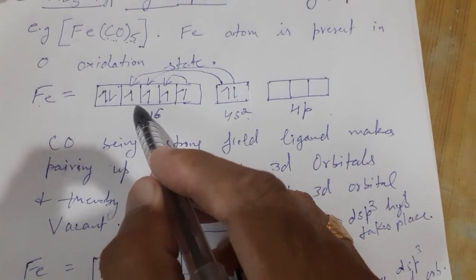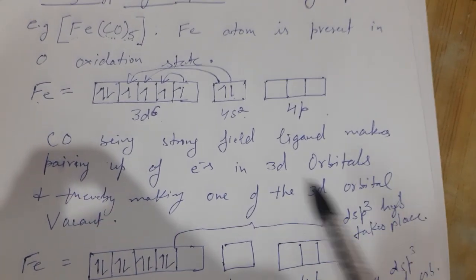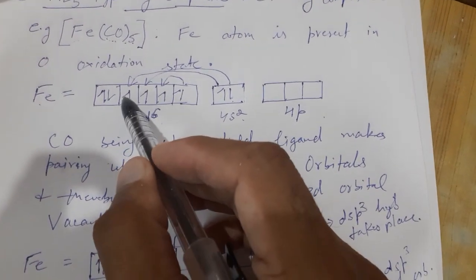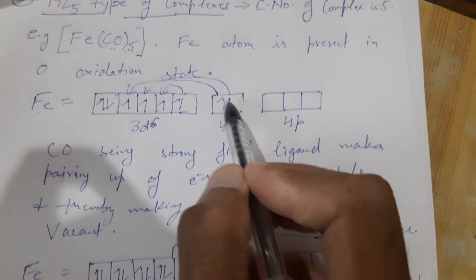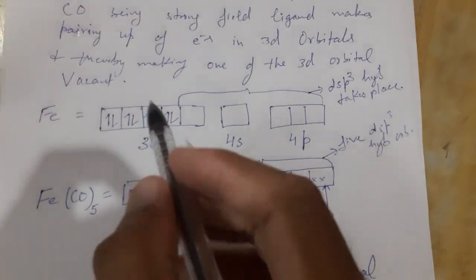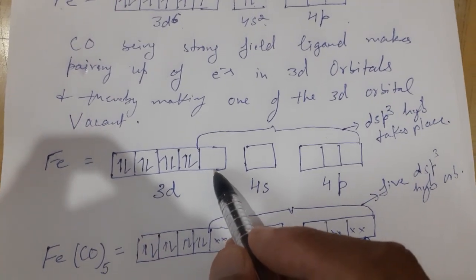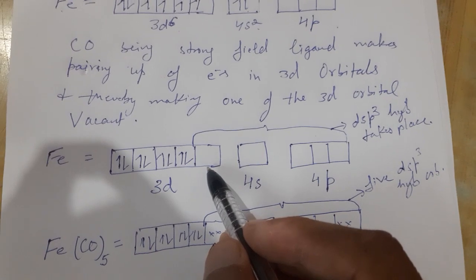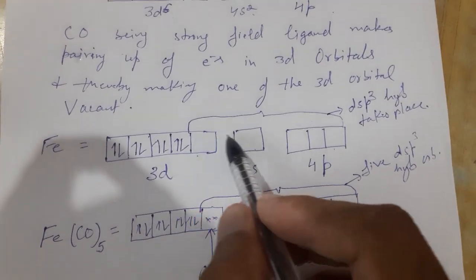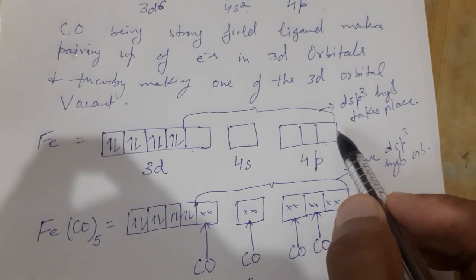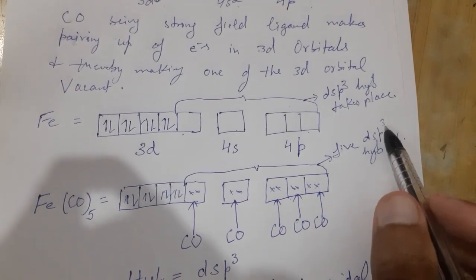This pairing can happen from the 3D orbitals themselves, but also from the 4S orbitals. CO causes the pairing of all unpaired electrons in 3D, and the two electrons from 4S also get paired up in 3D. As a result, all eight electrons get paired up in 3D orbitals. One 3D orbital becomes vacant, along with one 4S and three 4P orbitals — all five orbitals get hybridized to give five new DSP3 hybrid orbitals.